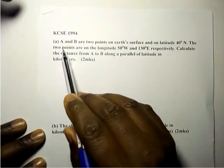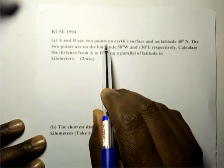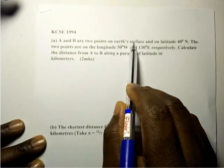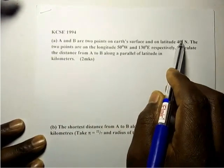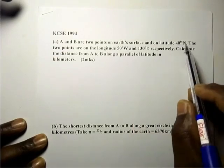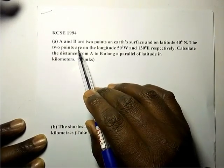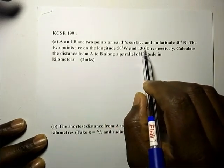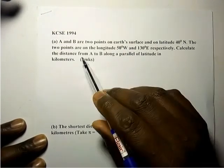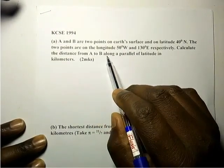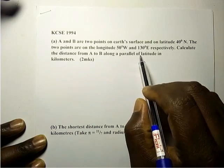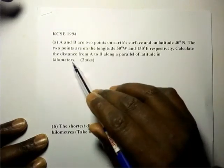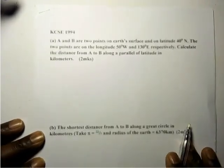A and B are two points on the Earth's surface on latitude 40 degrees north. The two points are on longitudes 50 west and 130 east respectively. Calculate the distance from A to B along a parallel of latitude in kilometers. First we need to sketch.